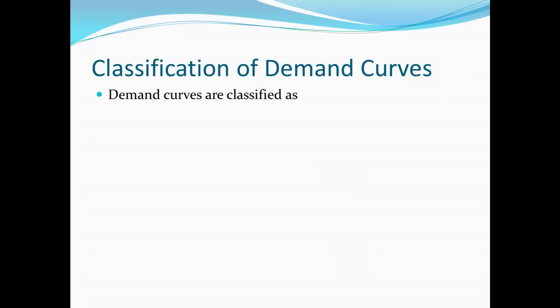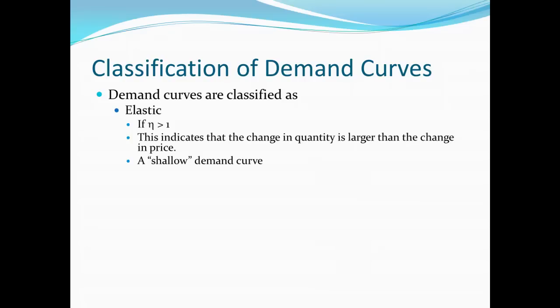Demand curves can be classified into a number of different categories. First, one category of demand curves we say are elastic, that is, if their measured elasticity is greater than 1. Having a measured elasticity of greater than 1 suggests that any change in quantity is larger than the change in price. As a result, we would say that people are very sensitive to price changes. Prices can change just a little bit and we get these big impacts on the quantity that people are willing and able to purchase. So when we draw the demand curve, it will end up having a very shallow kind of shape. It will be virtually flat.